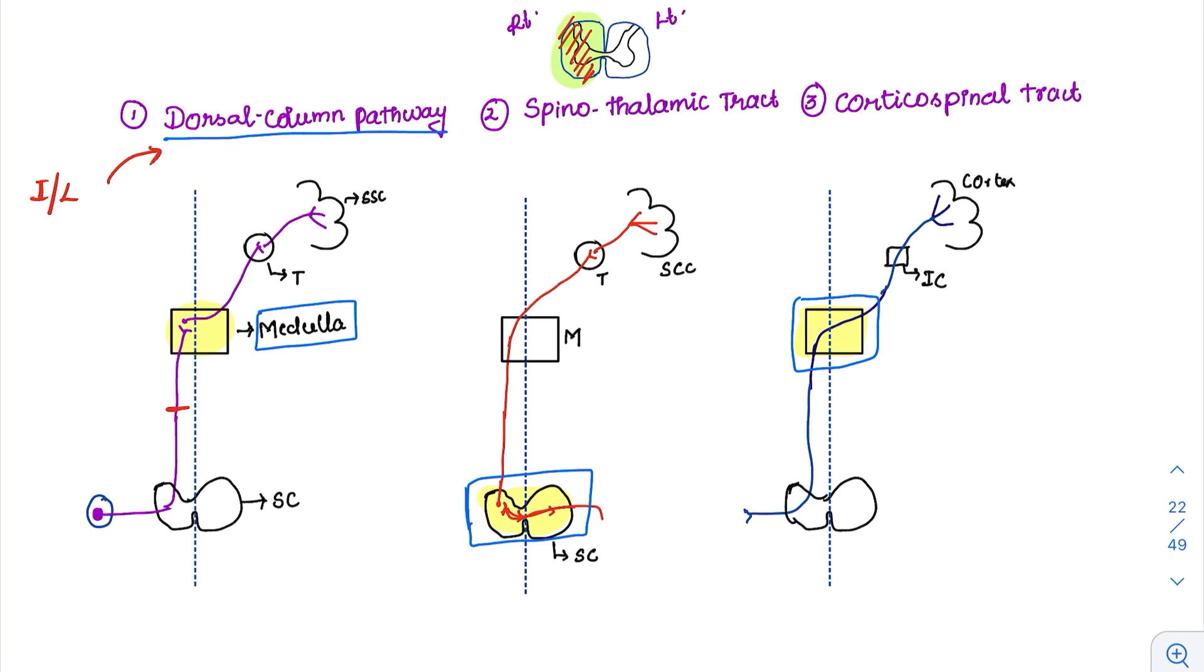Whenever I put the same right lesion here, what is happening? Trace it back. Trace it back. It goes here to the left side. So spinothalamic tract, already we have seen the contralateral side sensation is lost.